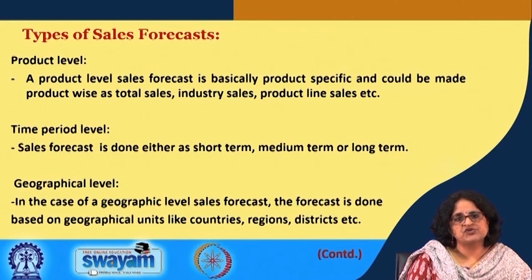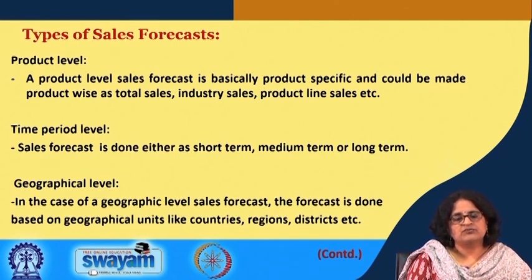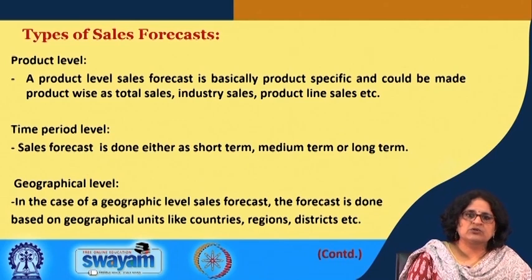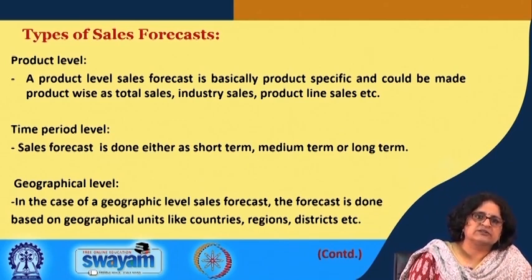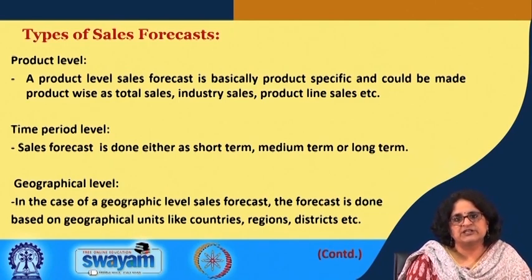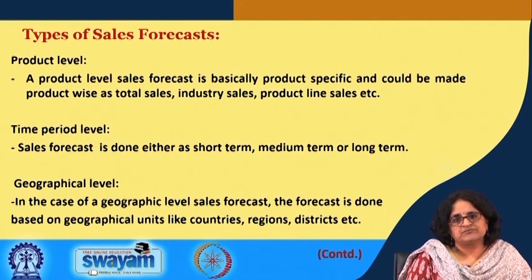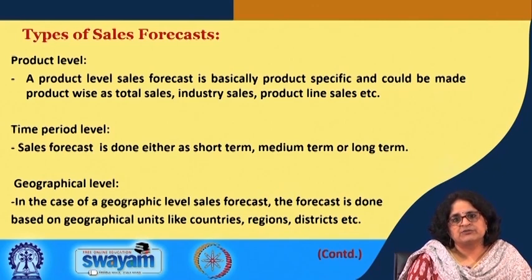When we talk of a time-period-level sales forecast, it is done either as short-term, medium-term, or long-term. When we talk of a geographical-level sales forecast, we talk of a forecast done on the basis of geographical units — which could be countries, regions, or districts, or even broadly by continent. For example, a company making refrigerators, air conditioners, and microwave ovens would make a product-level forecast product-wise — estimating company or industry sales for refrigerators, and similarly for microwaves. On a time-period basis, the forecast could be quarterly, half-yearly, yearly, or five-yearly, representing short-term, medium-term, or long-term.